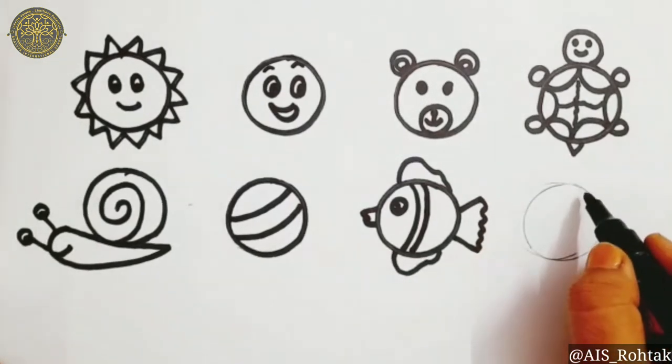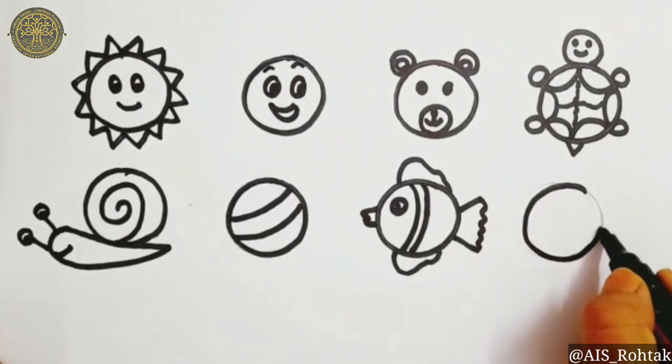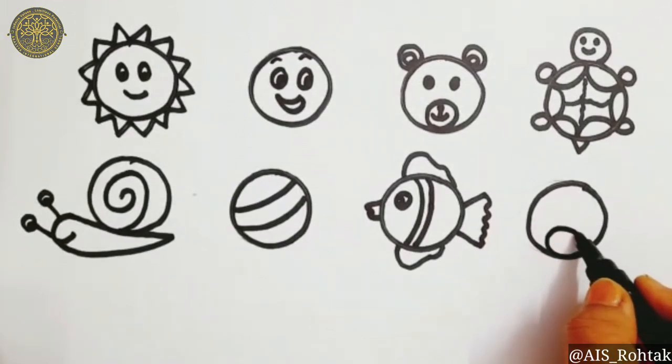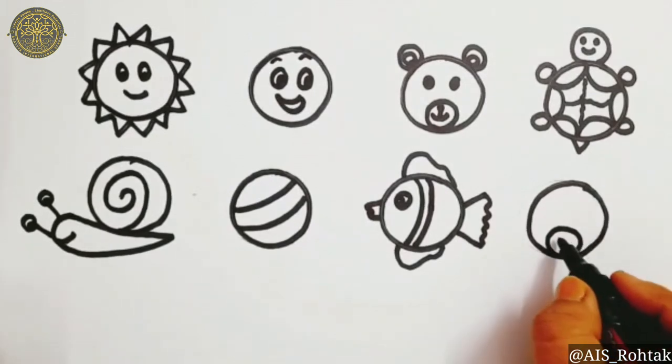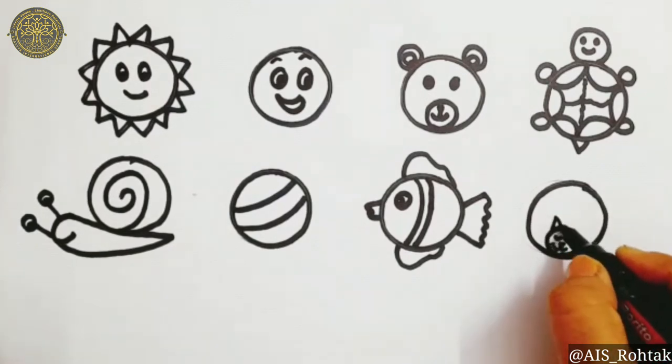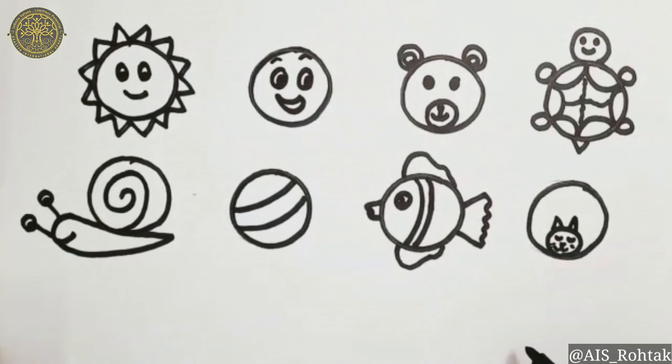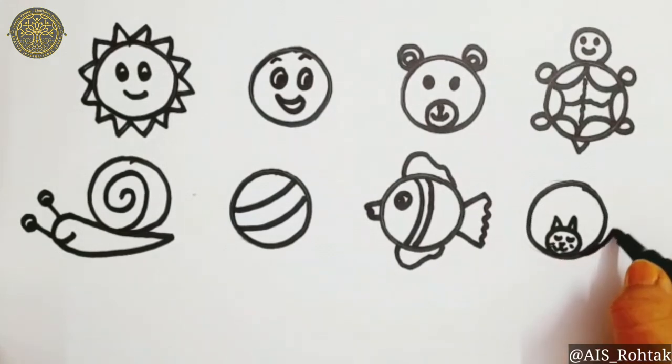Now come to the next circle. Do outline. We are going to make cat. Just draw one more circle inside this big circle for the cat. Draw eyes and mouth of the cat like this. Two triangles for the ear. And one tail like this.